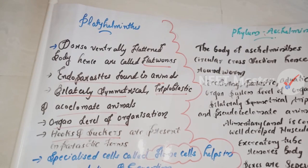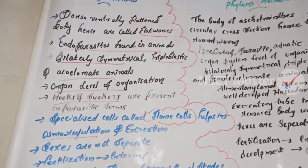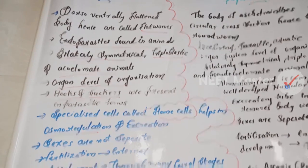Summary of Platyhelminthes: bilaterally symmetrical, triploblastic, acoelomate, organ level organization. In parasitic forms, hooks and suckers are present. They absorb nutrition directly from the host through their body surface. Specialized flame cells help in osmoregulation and excretion. Sexes are not separate; fertilization is internal; development is indirect with many larval stages. Planaria has a very high regeneration capacity.